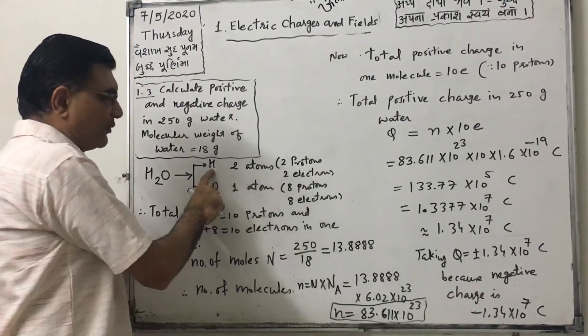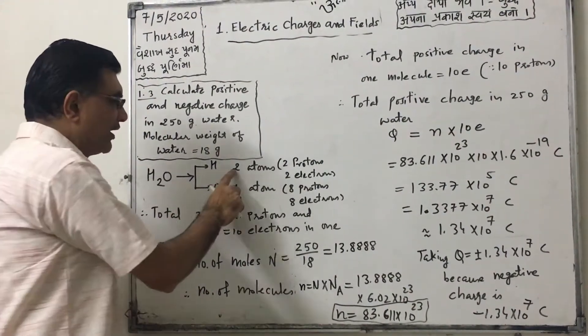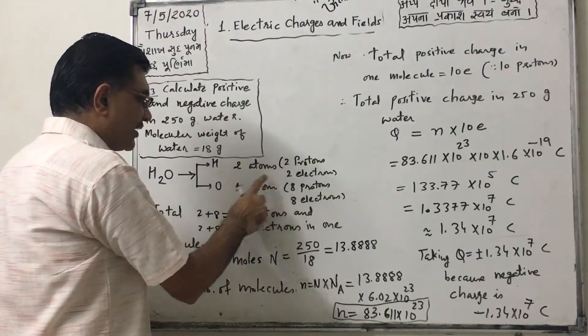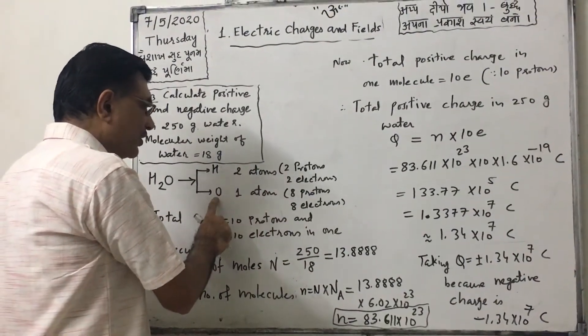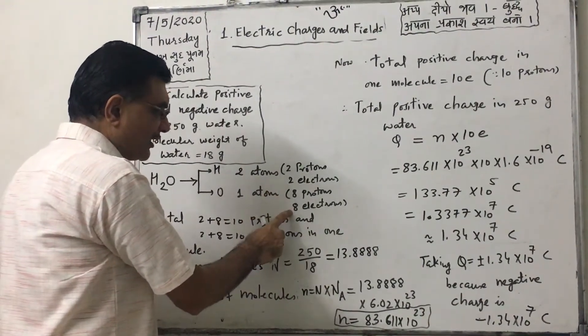In 1 atom of H, 1 proton and 1 electron. So in 2 atoms, there are 2 protons and 2 electrons. And in 1 atom of O, there are 8 protons and 8 electrons.